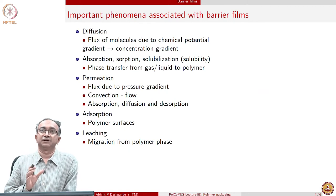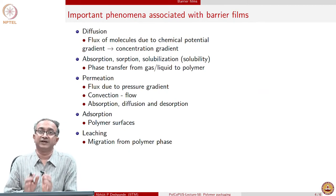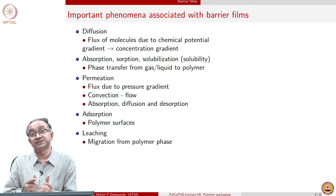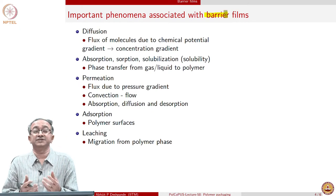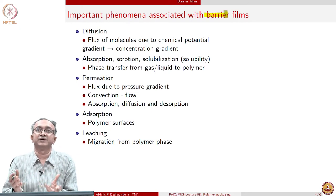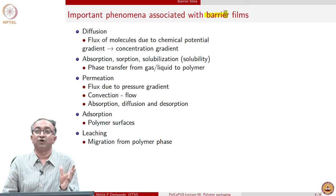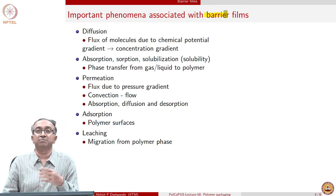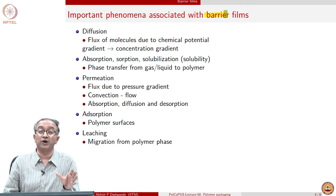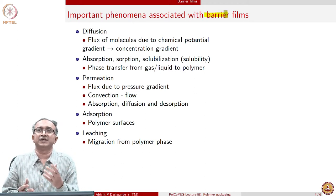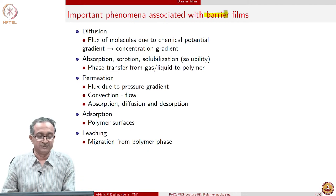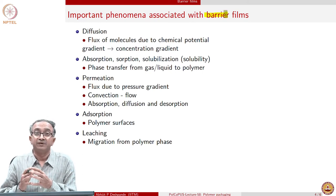Now, the important phenomena which occur in a barrier film — we will look at one example of barrier film, though polymers are used in several packaging applications. In case of a barrier, as the name suggests, small molecules are prevented from going one way or the other. Sometimes it may be a selective barrier — for example, it allows oxygen to permeate but stops carbon dioxide, or it may allow moisture to go but stop carbon dioxide and oxygen. Depending on the application, we may have several such possibilities, or it may prevent any small molecules from going through.